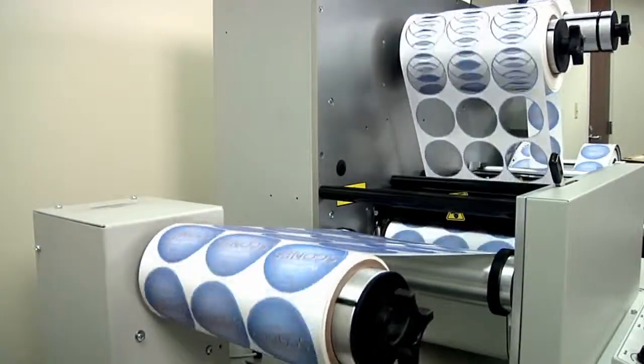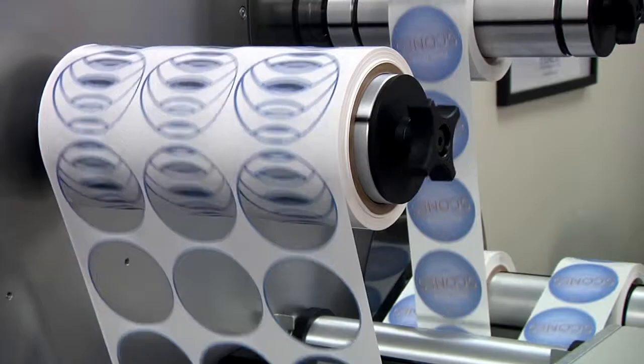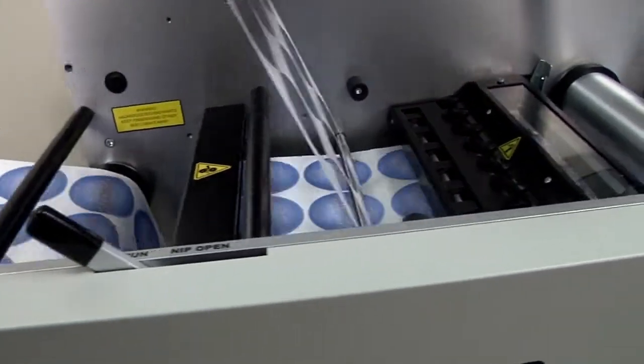Primera's FX1000E Matrix Removal System is the fast and easy way to remove the waste label matrix from your printed rolls of pre-die cut labels.